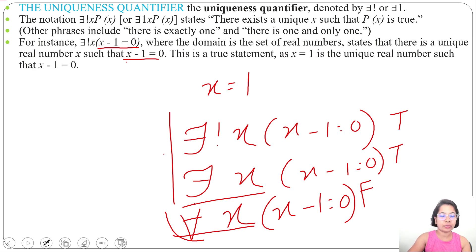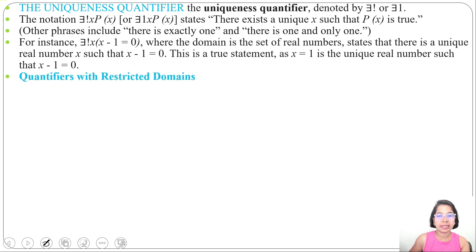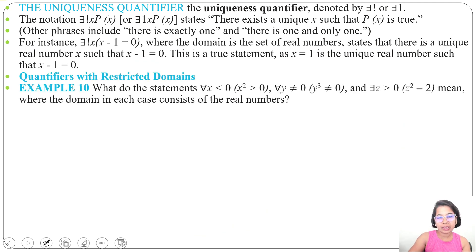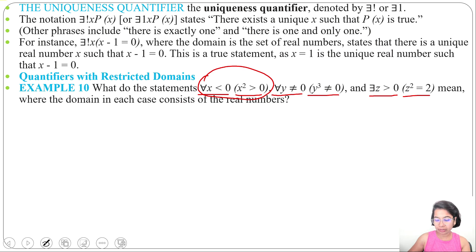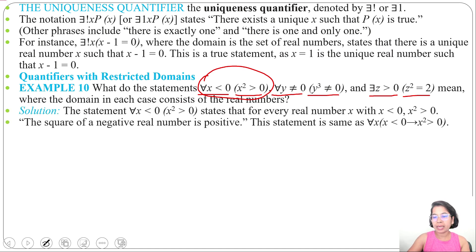Next is quantifier with restricted domain. For example: ∀x < 0 (x² > 0). For all x less than 0, x squared is greater than 0. This is true because negative squared is positive. It is equivalent to writing: ∀x (x < 0 → x² > 0).